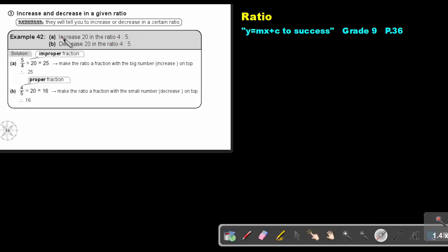Now, because it's increased, I want this 20 to become bigger. So that's why I take the ratio and I put the big one, the big number, over the small number and I multiply by 20. So the big over the small multiply 20 and it increases from 20 to 25.